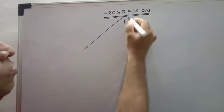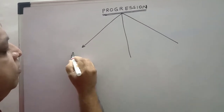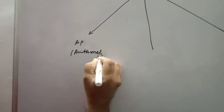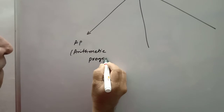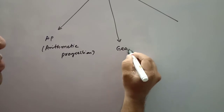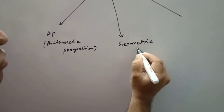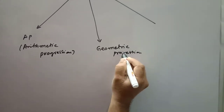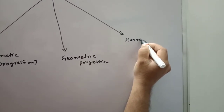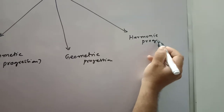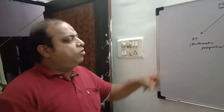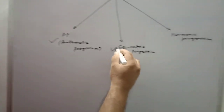There are three types of series in progressions. One is AP, which is called arithmetic progression. Secondly, geometric progression. And third is harmonic progression. We will study in detail about AP, geometric, and harmonic progression.